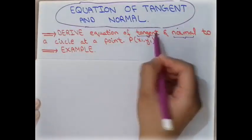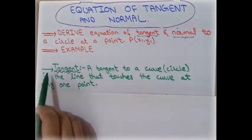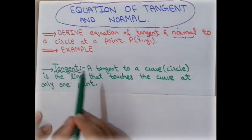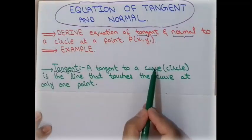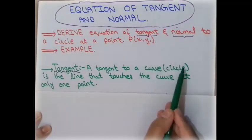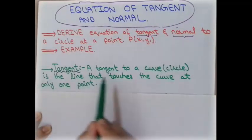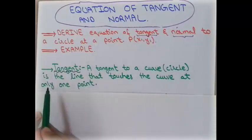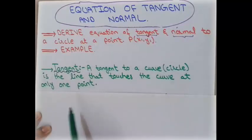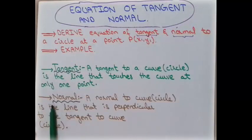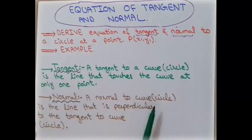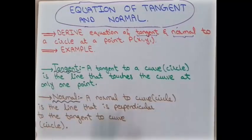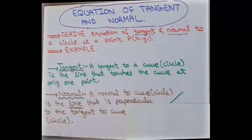Before writing the equations of tangent and normal, we must know what they are. A tangent to a curve — here the curve is a circle — is a line that touches the curve at only one point. A normal to a curve is a line that is perpendicular to the tangent to the curve.